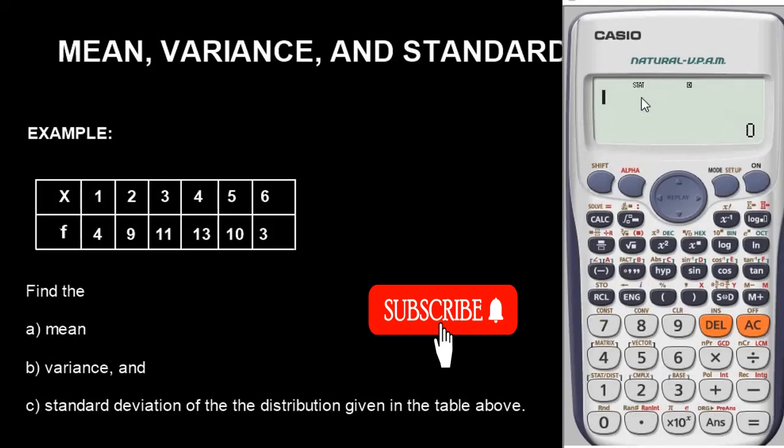To find the standard deviation, press Shift button 1 again, option 4. Option 3 represents standard deviation, so press 3, then press equals to get your answer. So our standard deviation is 1.36.